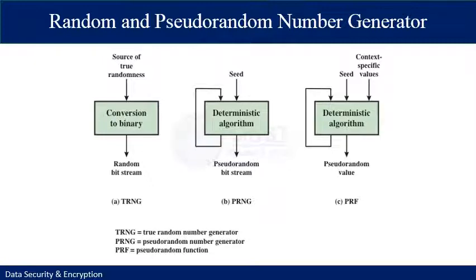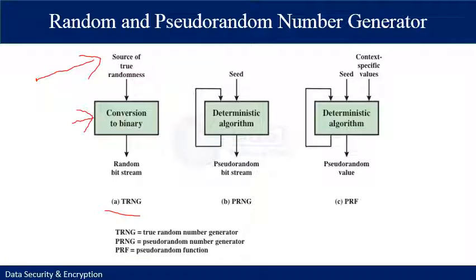This figure contrasts a true random number generator with two forms of pseudo-random number generators. The true random number generator is based on an entropy source from which random information is obtained. It converts this input to a binary random bit stream. The other two functions are forms of pseudo-random number generators: the pseudo-random number generator itself and the pseudo-random function.